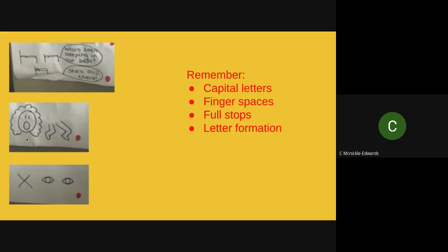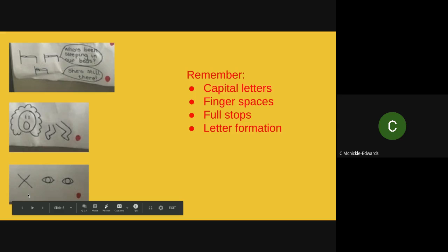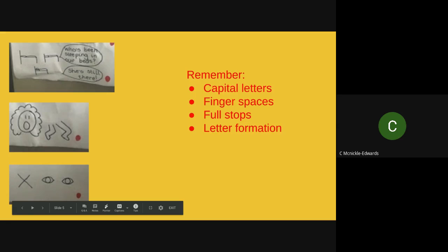Moving on to this sentence — Goldilocks screamed and ran as fast as she could out of the forest. Say that with me — Goldilocks screamed and ran as fast as she could out of the forest. Pause the video while you write that down. And then the final sentence of the story — she was never seen again. Say that with me — she was never seen again. Write that down, pause the video.